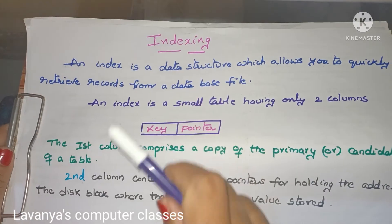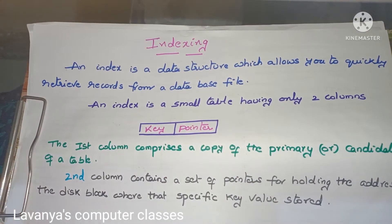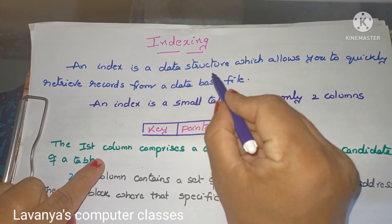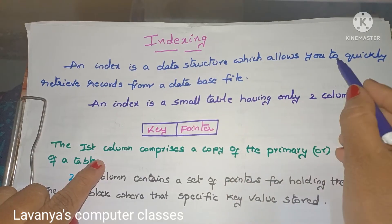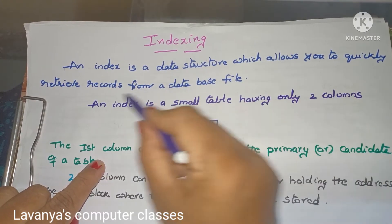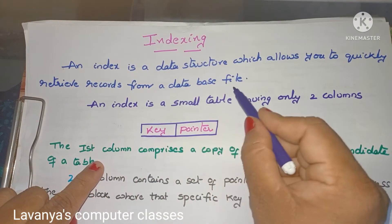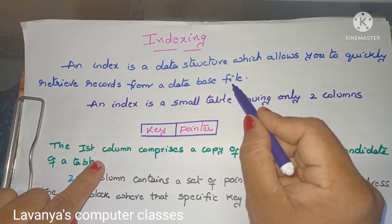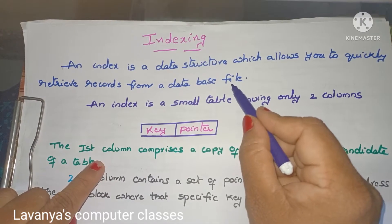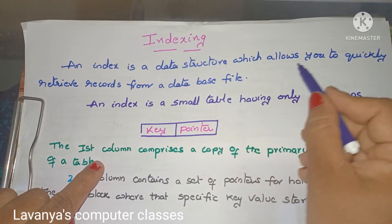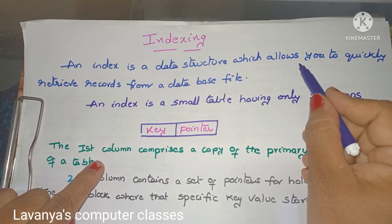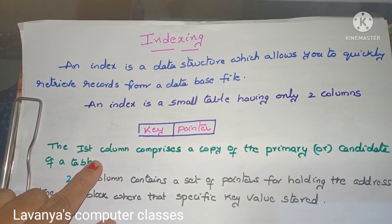So, what is the definition of indexing? An index is a data structure which allows you to quickly retrieve records from a database file. The index is like a data structure, and its use is for quickly retrieving data from your database.